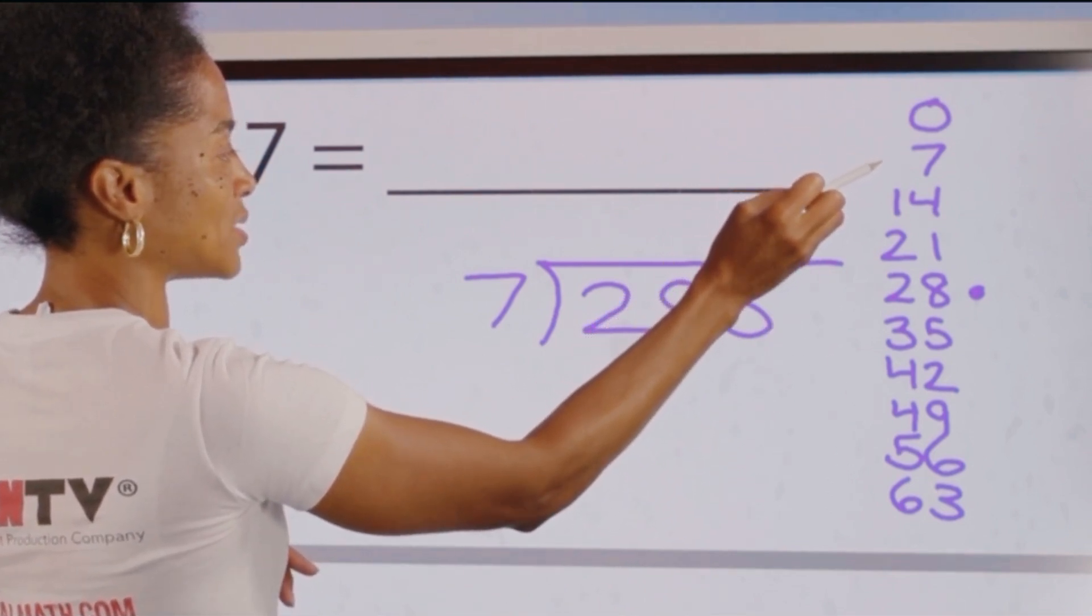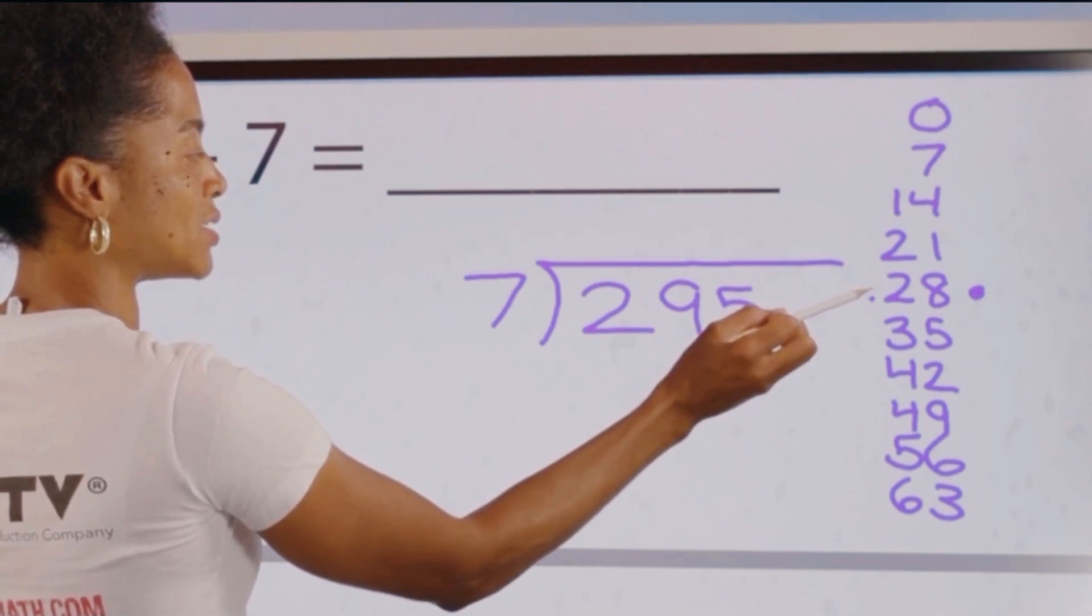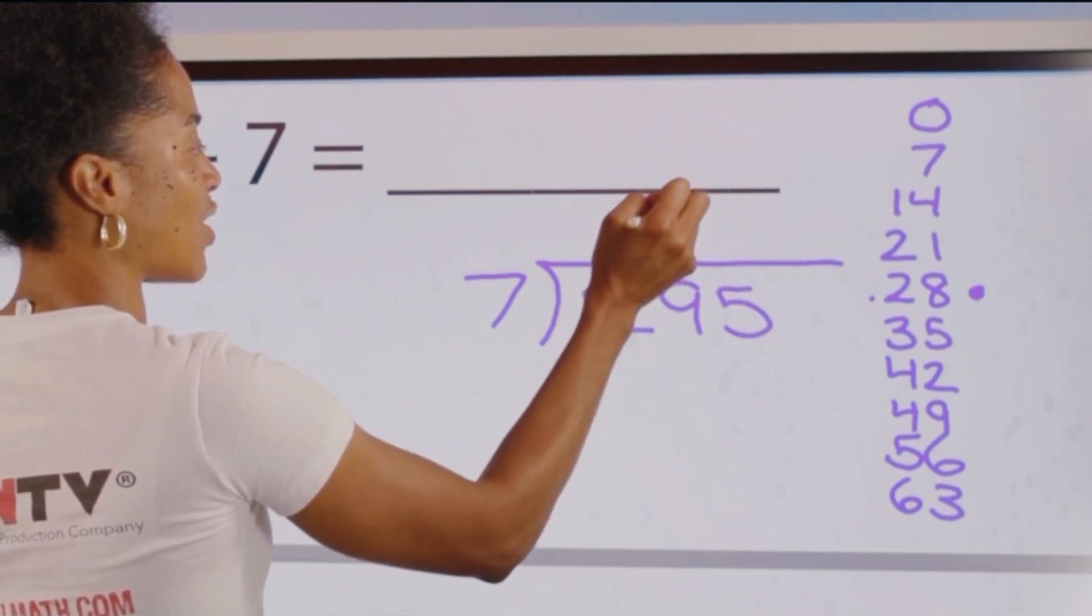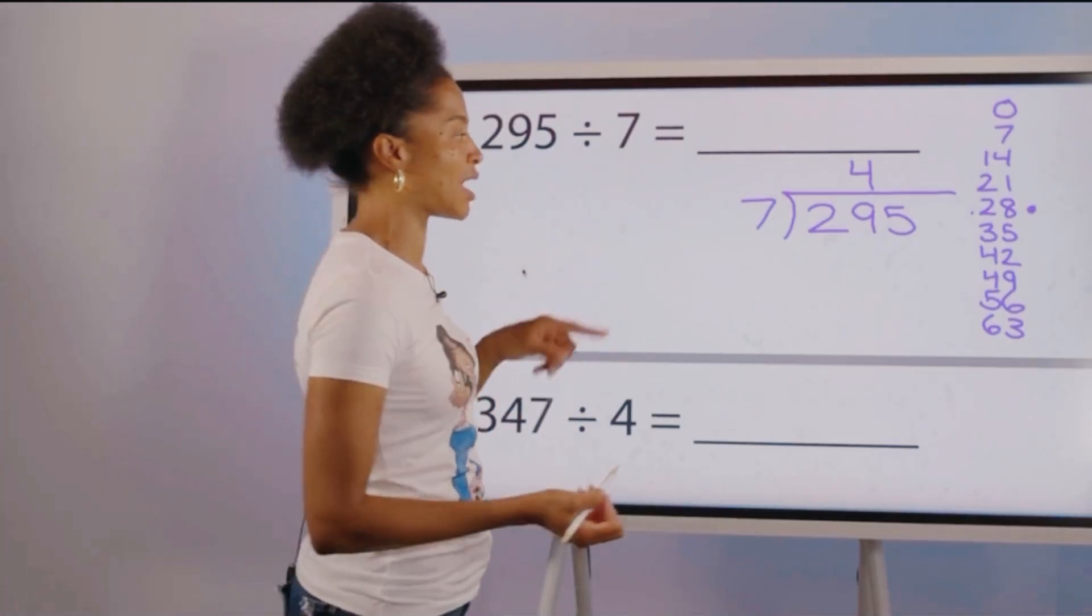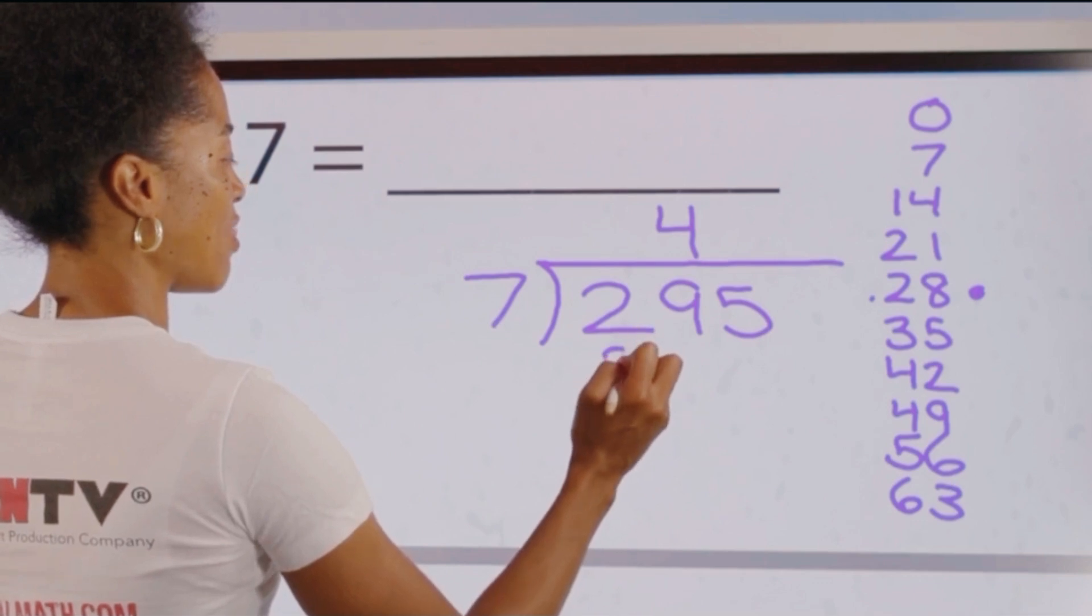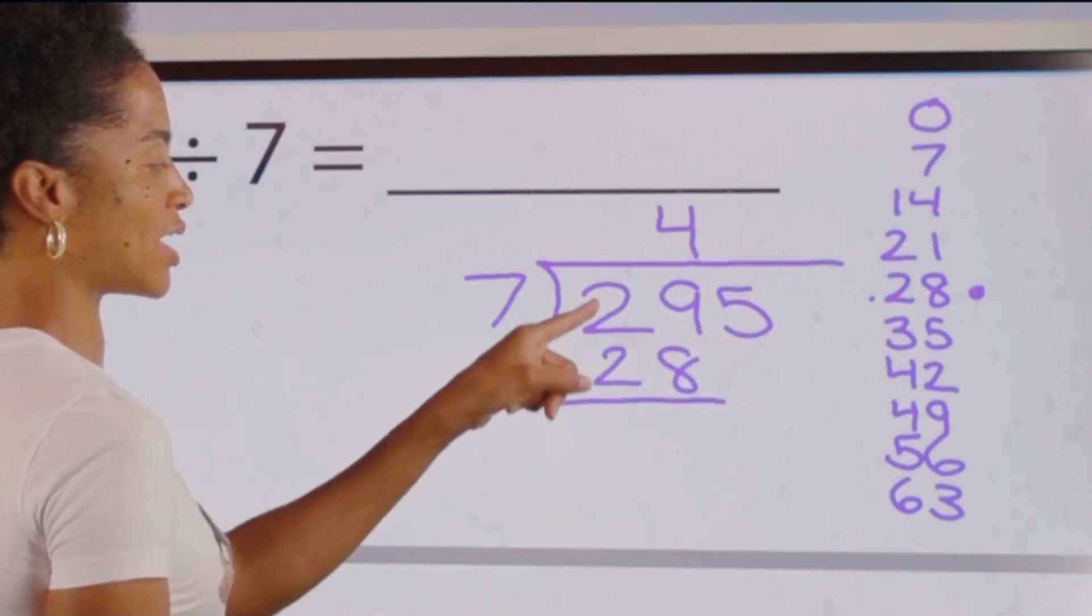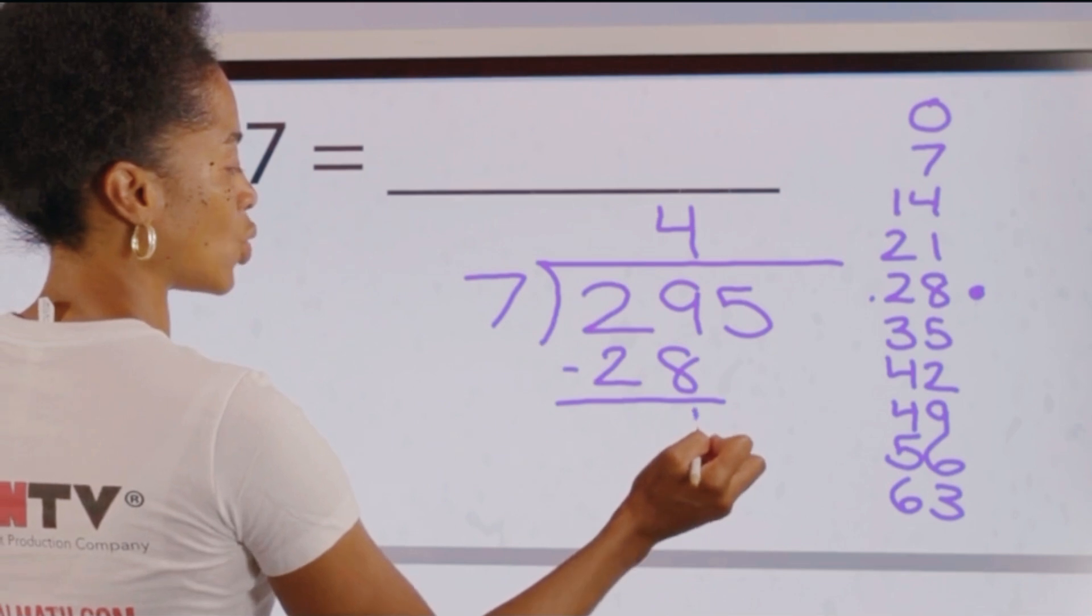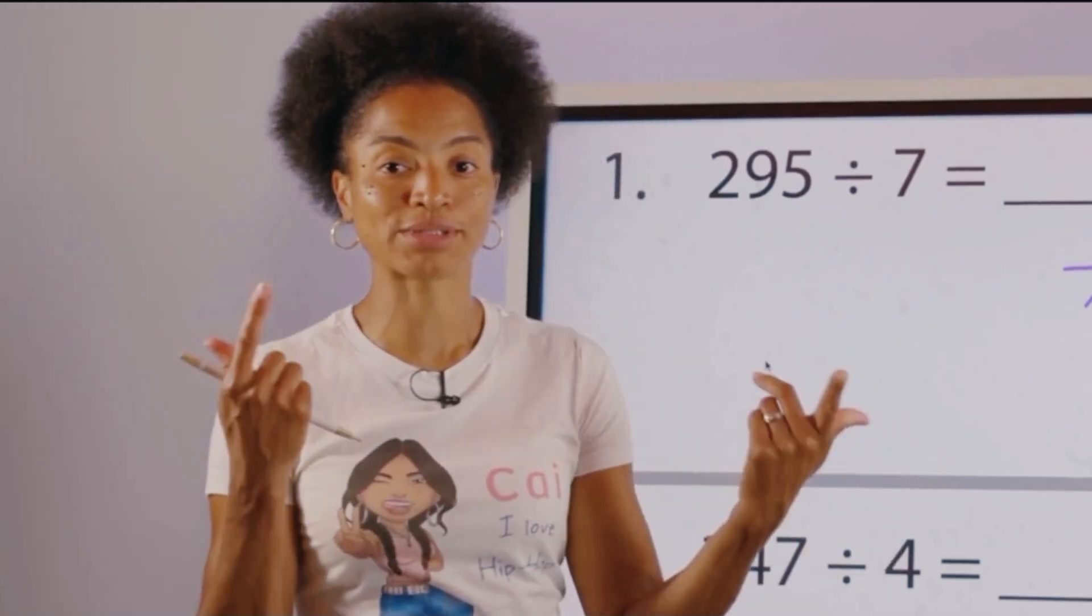So this is 0 groups of 7, 1 group of 7, 2 groups of 7, 3 groups of 7, 4 groups of 7 we can get out of 29. Divide, put the number of groups at the top. Multiply 4 times 7, put the number we stopped at at the bottom. Subtract 28 from 29 gives us 1. Bring down the 5.